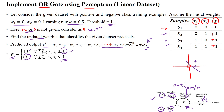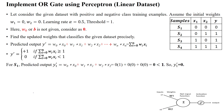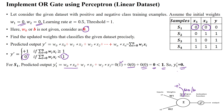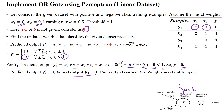Applying the perceptron learning rule to sample 1: w0·x0 is 0·1=0, w1·x1 is 0·0=0, w2·x2 is 0·0=0. The sum is 0, which is less than 1, so the predicted output y' is 0. Comparing with the actual output: both are 0, so they match — sample 1 is correctly classified and weights need not be updated. Move on to sample 2.